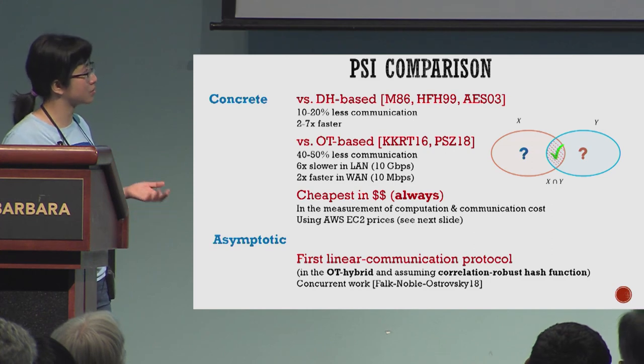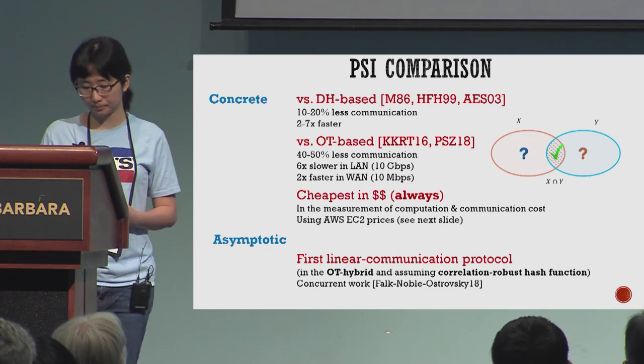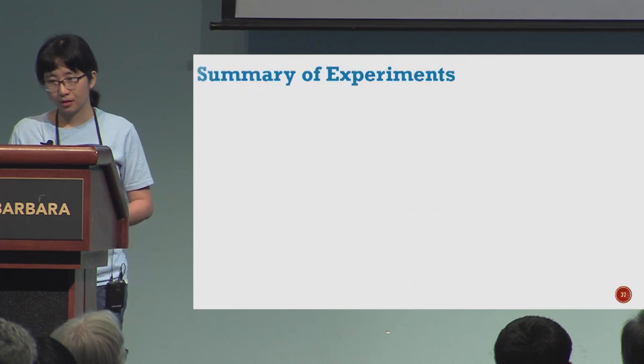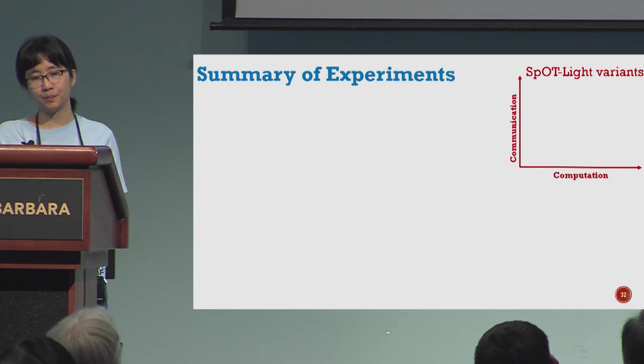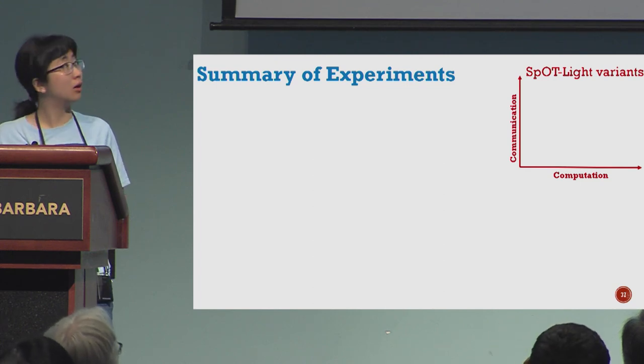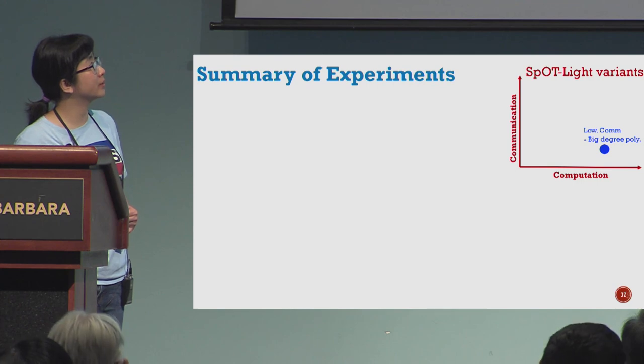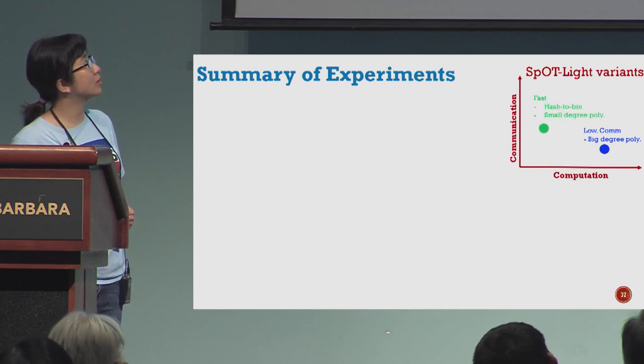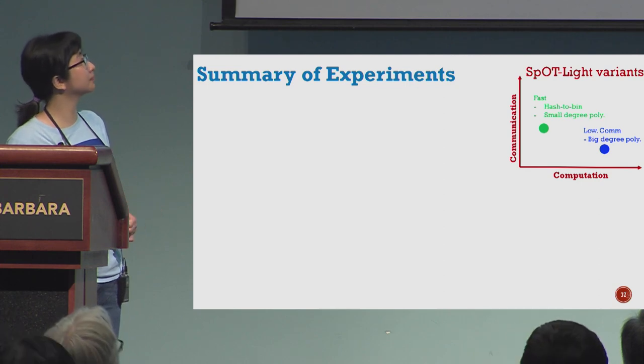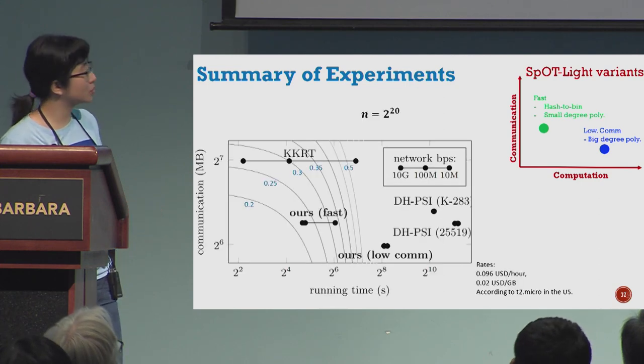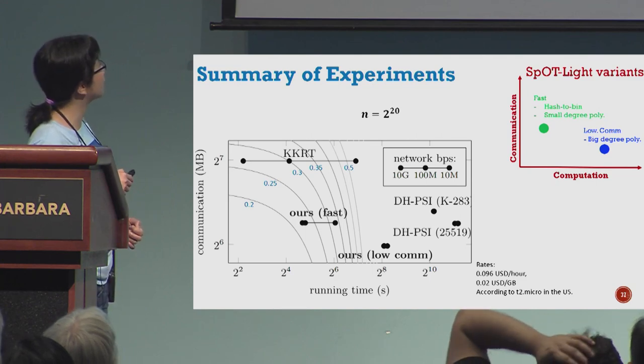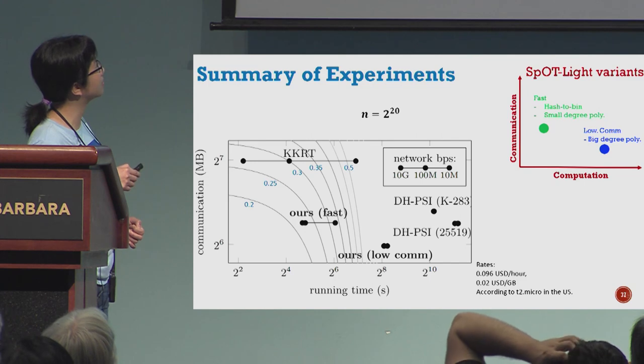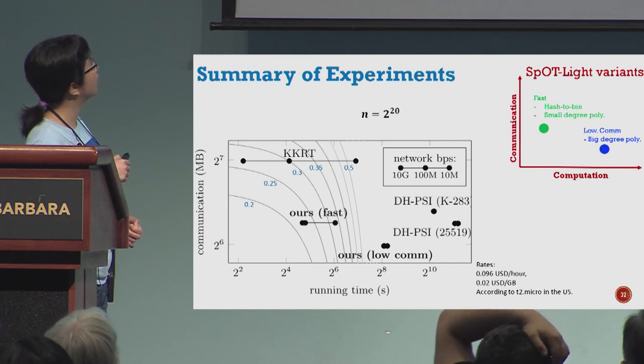If we put our two variants in the computation and communication graph, one variant is here with low communication, and another variant is fast in terms of running time. Compared to our previous work, our protocol is the cheapest one. For the LAN setting we are in this zone, and for the WAN setting we are in the dark zone.